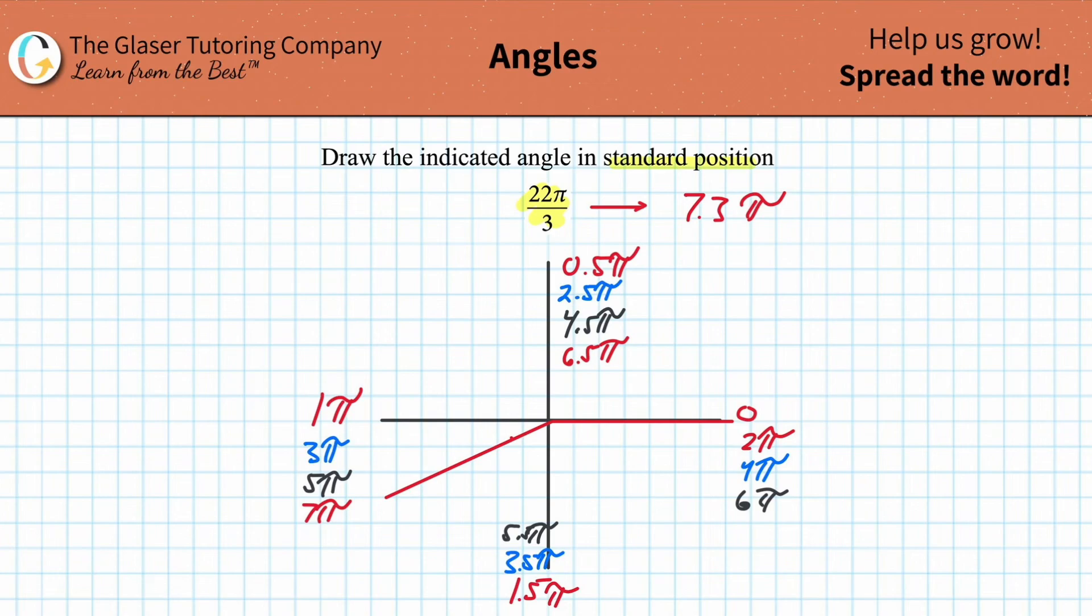But when we think about it, we went around how many times? We went around six times? No, excuse me, four times. 1, 2, 3, 4, and we finally get there. So this is the answer. This is what it looks like. But that's how to think about it. It's not that bad.